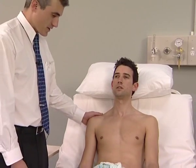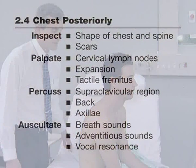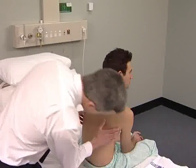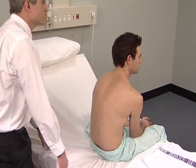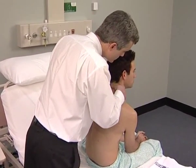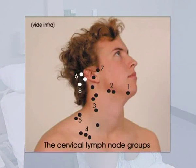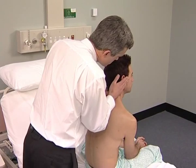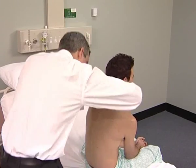Most clinicians examine the back of the chest next, as there are likely to be more signs of lung disease there. Sit the patient over the edge of the bed. Look at the shape of the chest and spine, and look for thoracotomy scars that may indicate previous lung surgery. The cervical lymph nodes are best examined from behind the patient. Some people find it easier to examine the supraclavicular nodes from this position, which is easy if the patient is sitting in a chair.